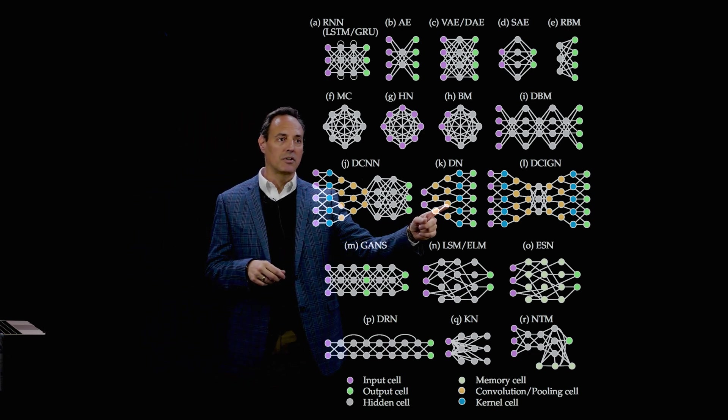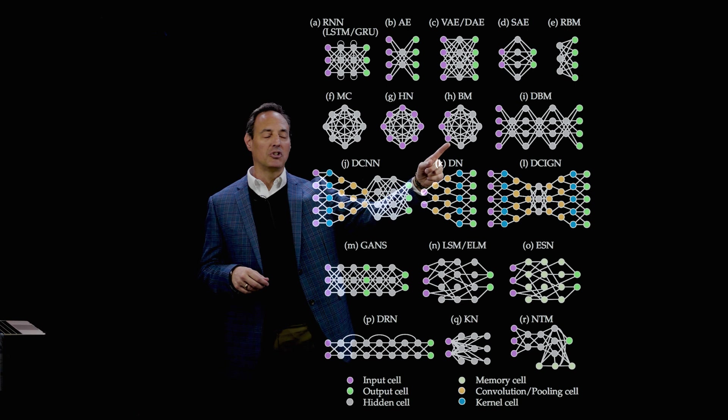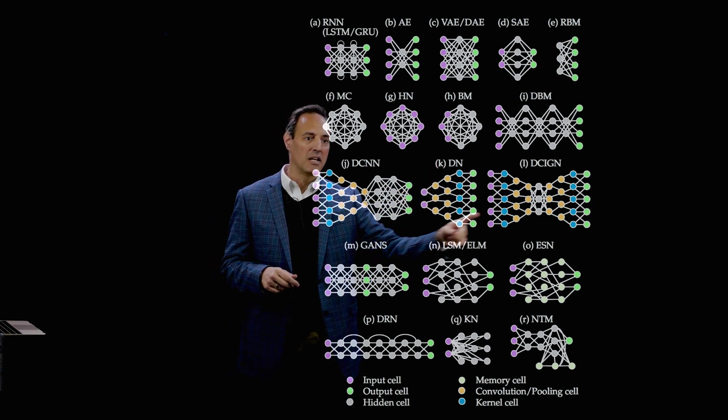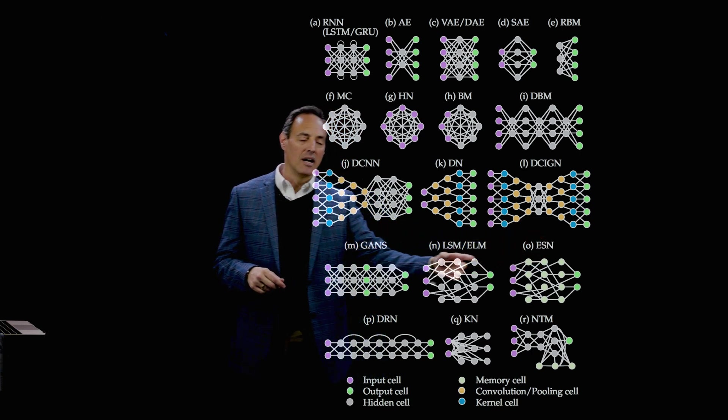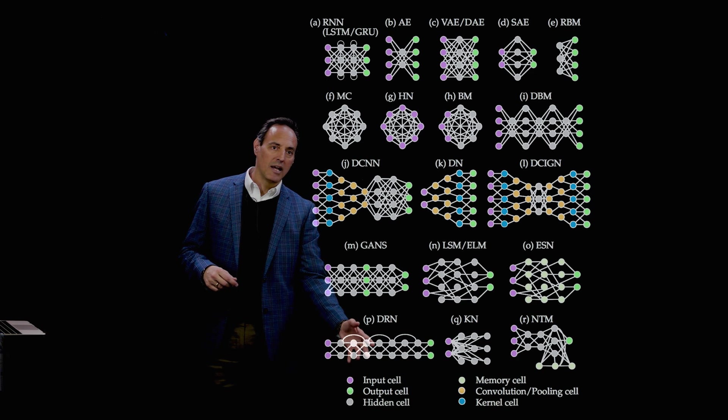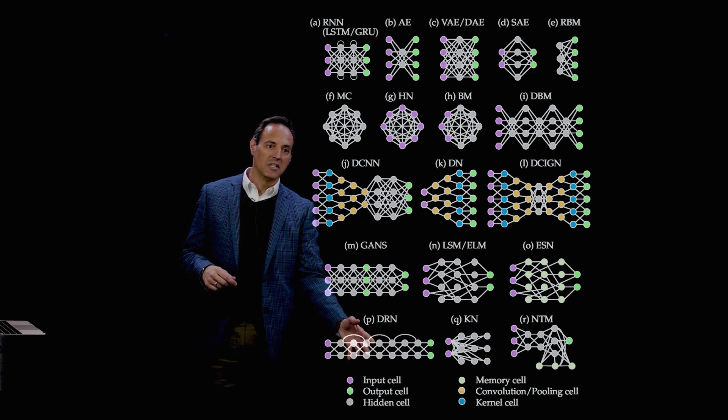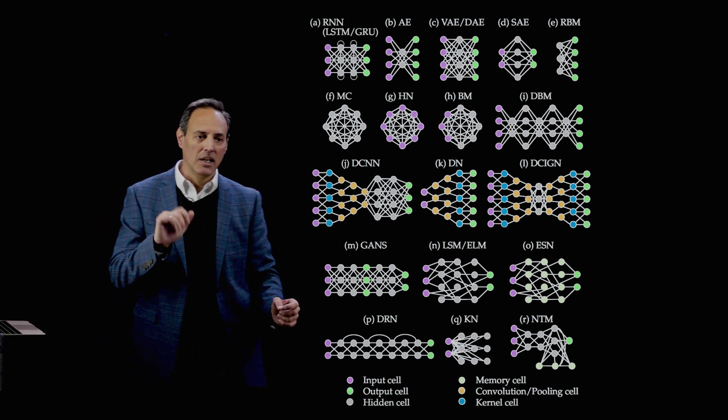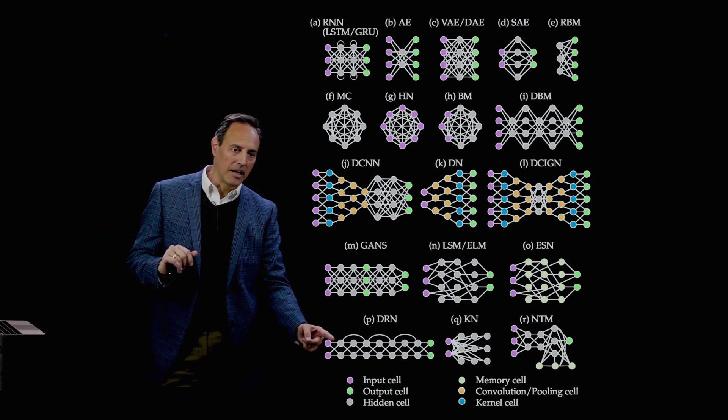You have decoder networks, Boltzmann machines, various different design architectures, echo state networks, generative adversarial networks. I'm going to highlight deep residual networks for engineering applications because one of its key features is that it has skip connections.